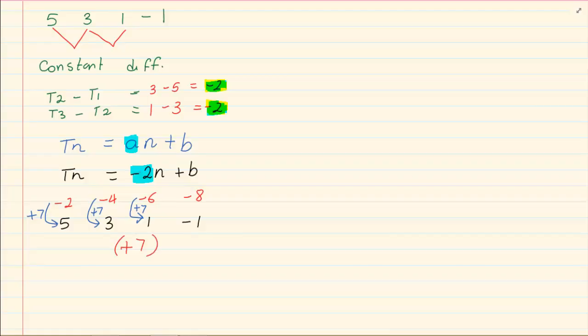So once we got A, then we see what is the difference from the multiple which comes from A and the number pattern which is given to you. Then we can get the formula. So the final formula is Tn is equal to, our A is minus 2 which is what you call the constant difference and then we got plus 7 which is the change from the original multiple to the number pattern.